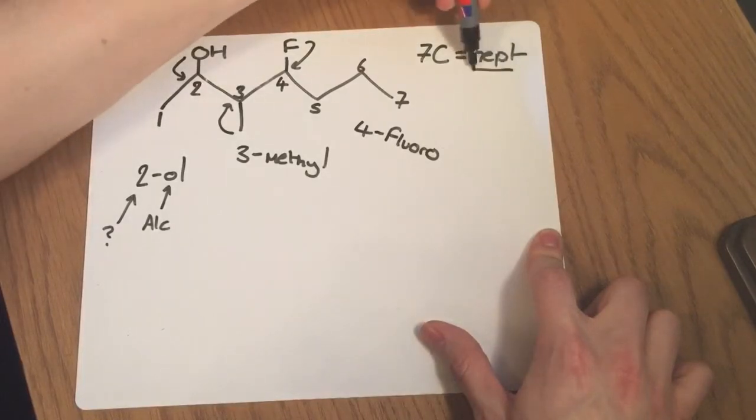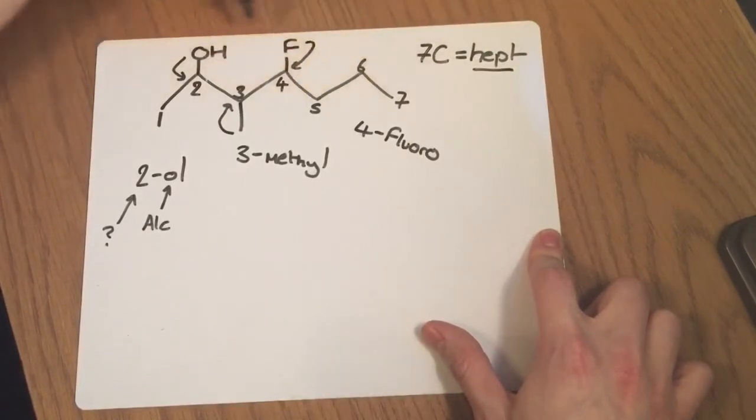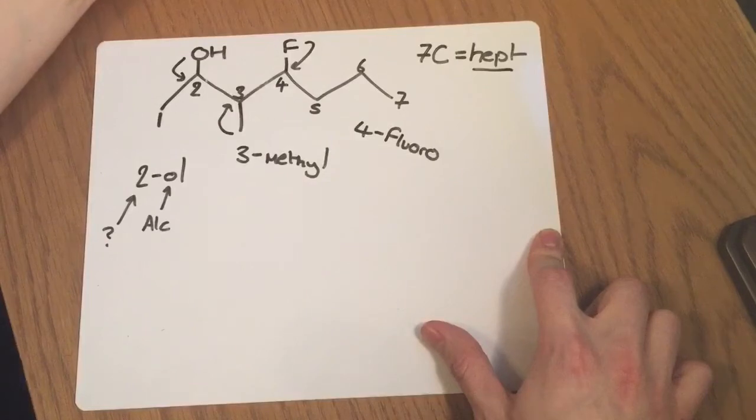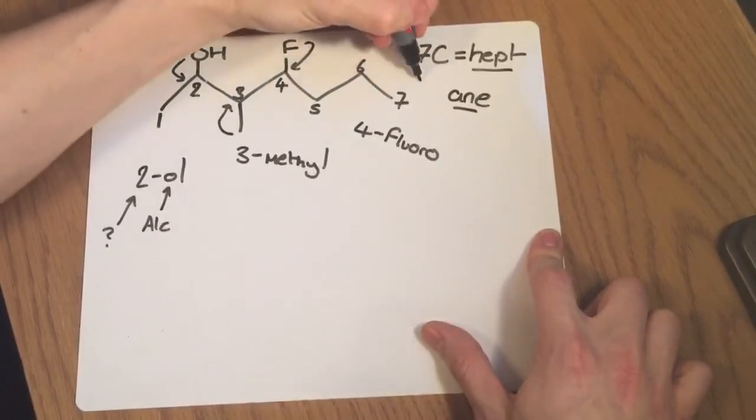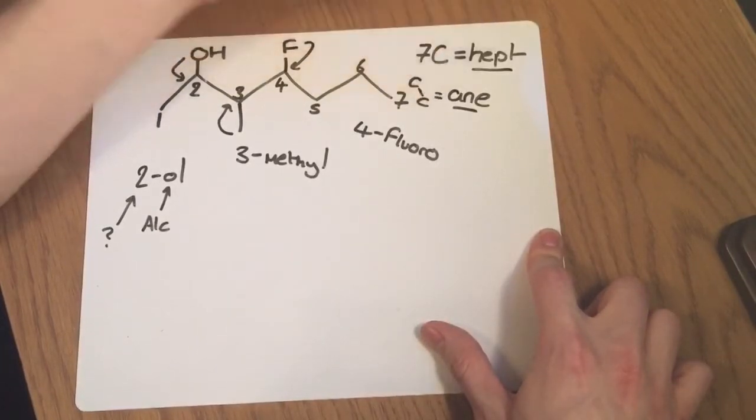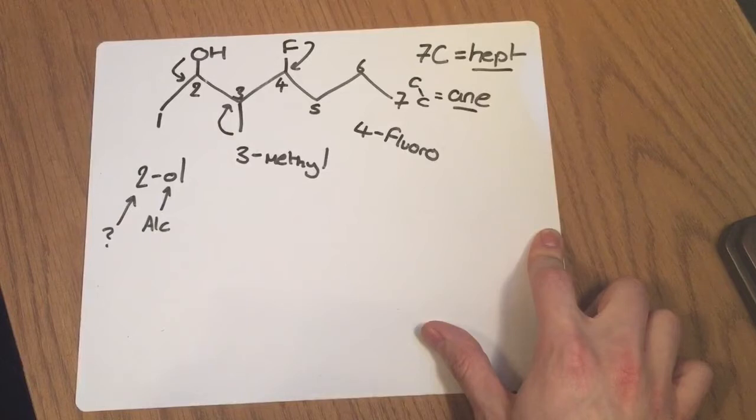I've got hept as the longest continuous chain and I've got no unsaturated bonds in here. So I know I've also got ane since I've just got carbon-carbon single bonds. I've got saturated bonds throughout the structure. I've got no alkene group or alkyne group in this so I can make sure I just use ane.